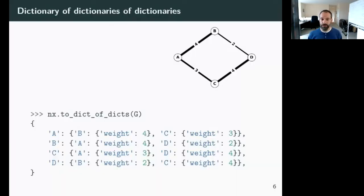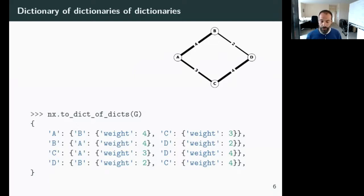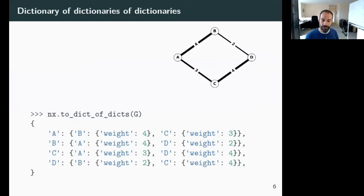Our basic underlying data structure — unlike much of the ecosystem — is not a NumPy array, it's a dictionary of dictionaries of dictionaries. A graph is at the top level a dictionary whose keys are the nodes, and the values for each node are its adjacency list — another dictionary. For example, node A is adjacent to B with edge data weight 4, and adjacent to C with weight 3. It's a very flexible format: nodes need any hashable Python object, and edge attributes can be any Python object.